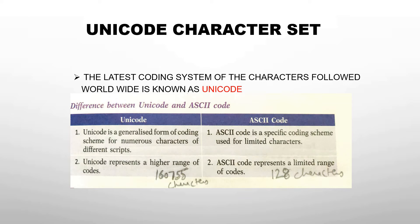Now the next topic is the Unicode character set, which we did not discuss in chapter one. When you press any key on the keyboard, your system assigns a code for storage purposes. For example, pressing capital A assigns the code 65, B is 66, and so on. You may have heard of ASCII code, which also assigns codes.